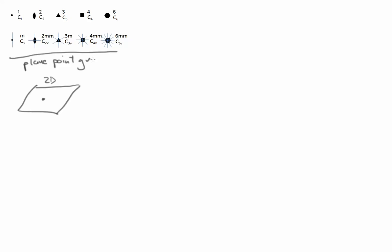These are different from space point groups — sometimes just called point groups — because those operate in three dimensions. Here we only have to worry about patterns that exist in the two-dimensional plane. To get these plane point groups, we think about combinations of rotation and reflection elements. There are only five rotation axes allowable in two dimensions in plane point groups.